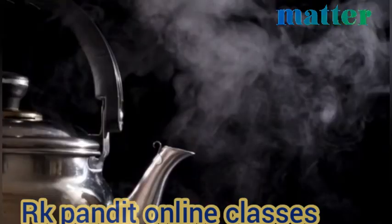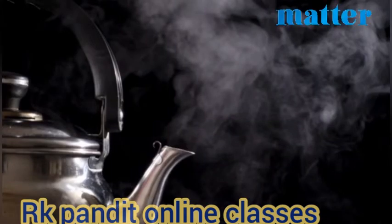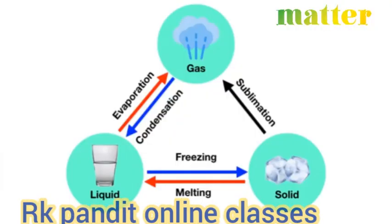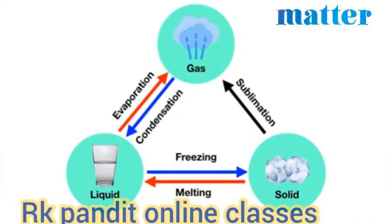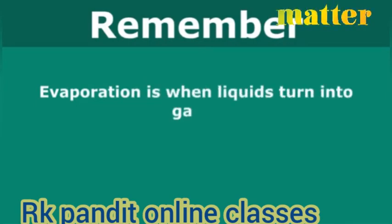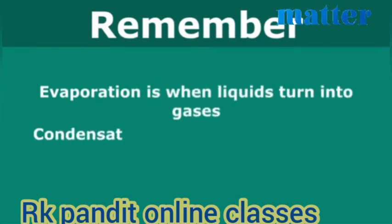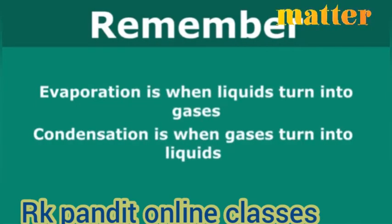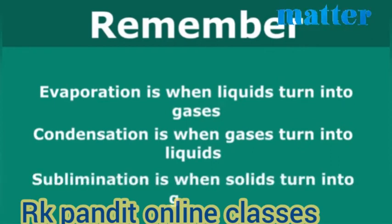When you boil a pot of water to make tea, you can see gas coming out of the kettle. Liquid water is turning into water gas or water vapor as you boil it — this is an example of evaporation. Remember: evaporation is when liquids turn into gases. Condensation is when gases turn into liquids. And sublimation is when solids turn directly into gases.